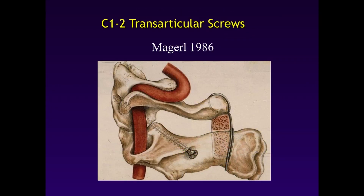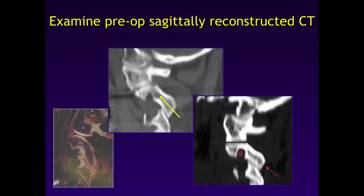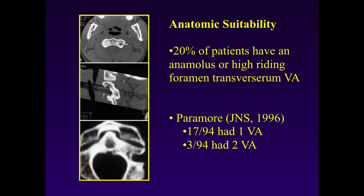The most common cause of vertebral artery injury is during C1-C2 fixation, which became evident with the popularization of transarticular screws. Prior to placing transarticular screws, you must examine the sagittally reconstructed CT scan to ensure there is a safe pass up the isthmus of the pars of C2 into the lateral mass of C1-C2, as seen on the yellow arrow. The red arrow area would be very tight for screw placement and could cause injury to the vertebral artery. About 20% of patients have an anomalous or high-riding foramen transversarium in C2, as shown in Chris Paramore's paper — 17 out of 95 patients.